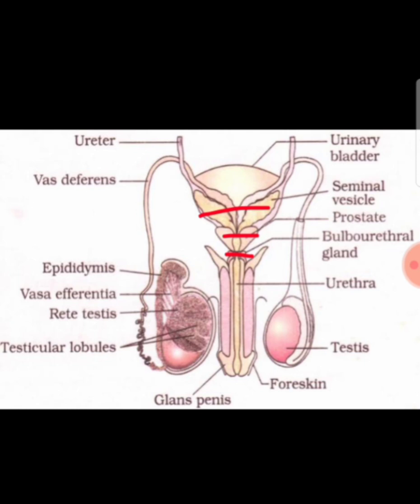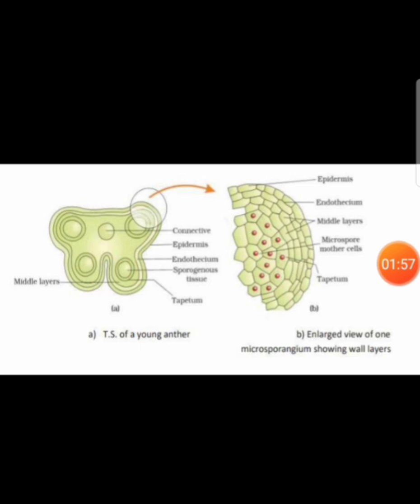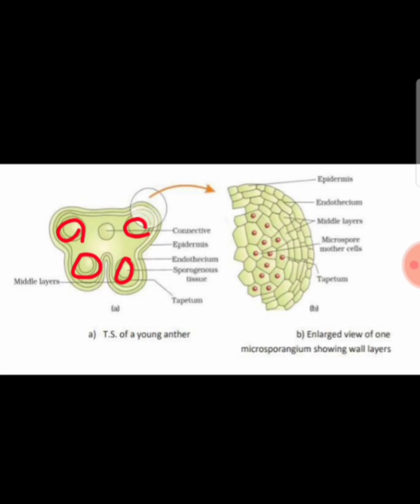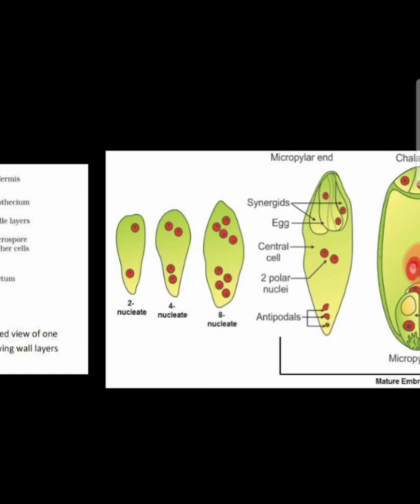Let us move to the next diagram — the transverse section of an anther. Please remember the inner layer called the tapetum, which helps in nourishing the developing pollen grains. Also, inside the microsporangium, you can find sporogenous tissue. This sporogenous tissue undergoes reductional division to produce a microspore tetrad, which finally converts into pollen grains.